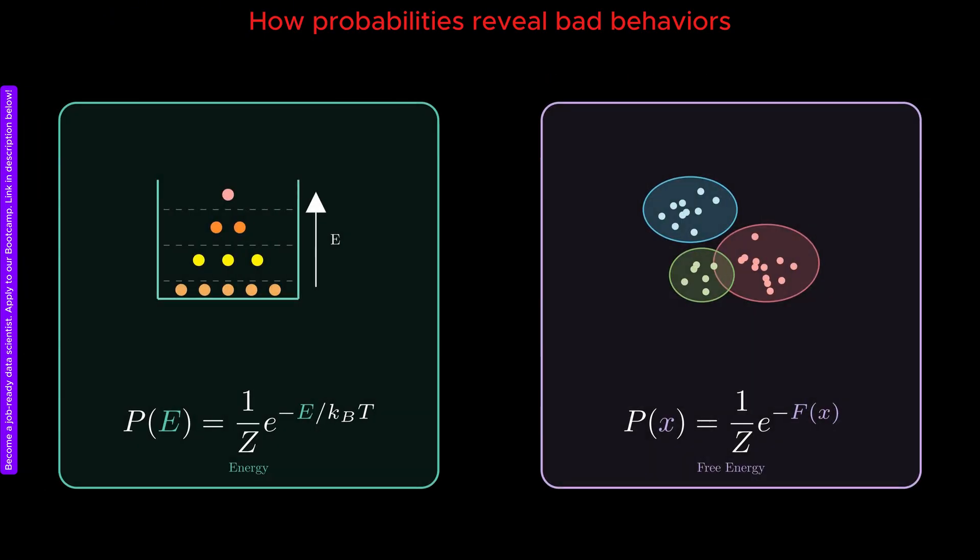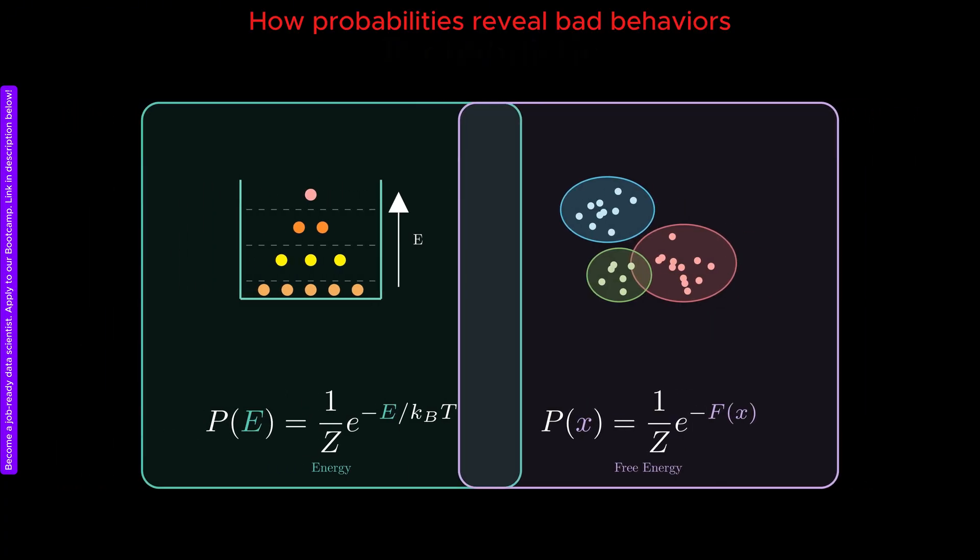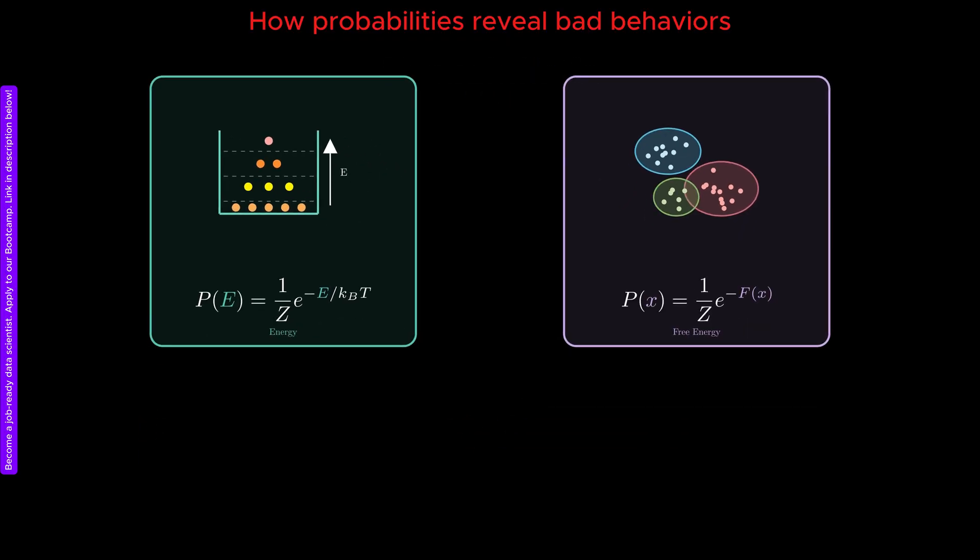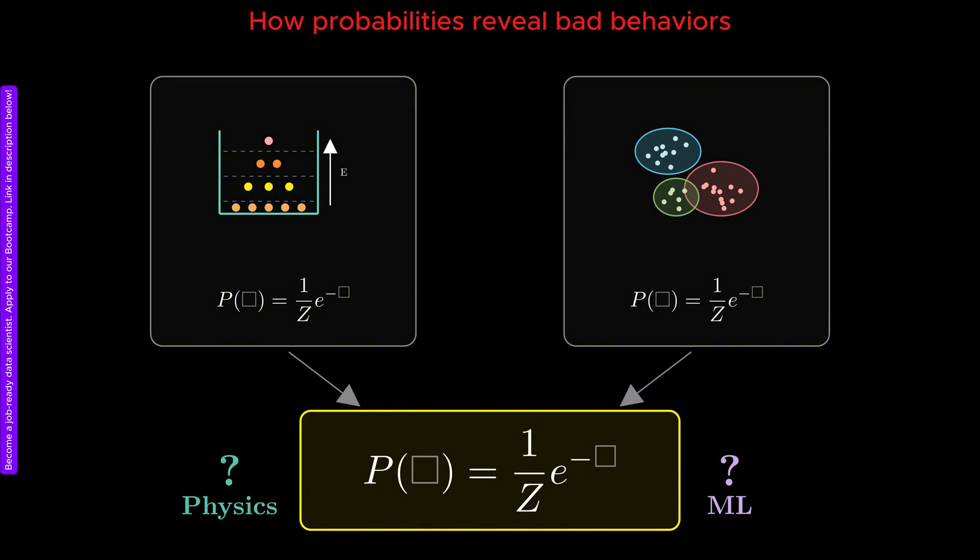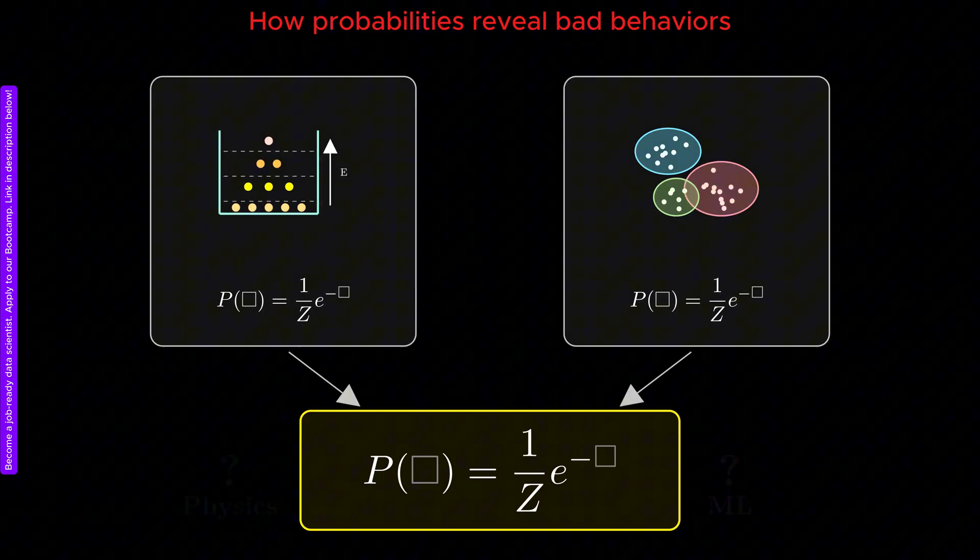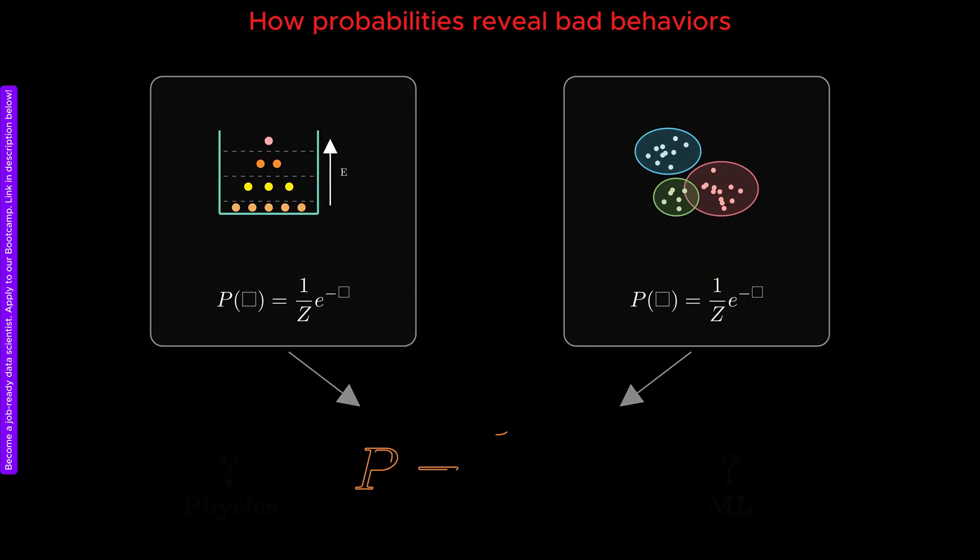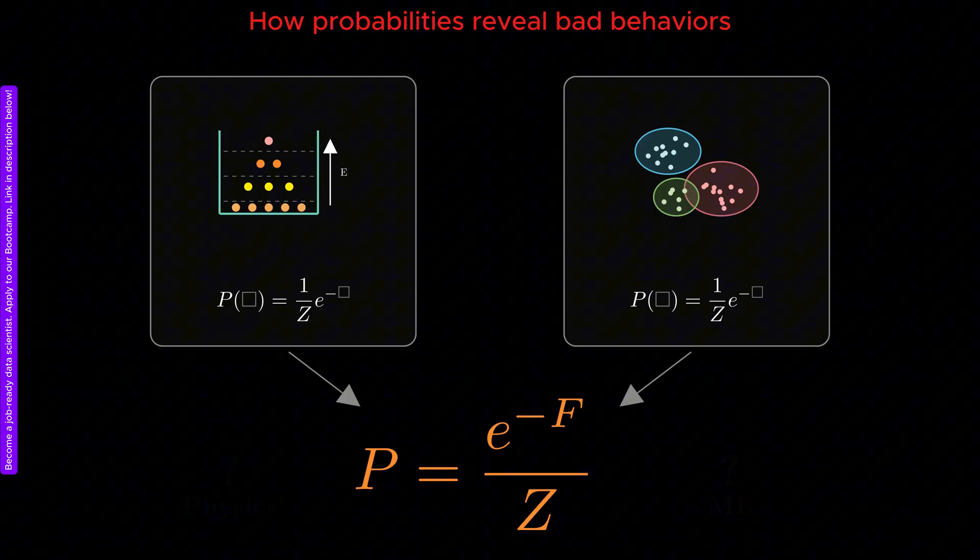As we have explained several times on this channel, physics and machine learning models both admit probabilistic descriptions of events. At a mathematical level, they share the same formal structure. If you strip away the interpretation of the variables, it can be impossible to tell whether an equation is describing a physical system or an AI model. In both physics and AI, probability often takes the following form. In this equation...